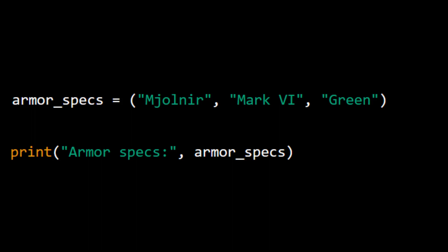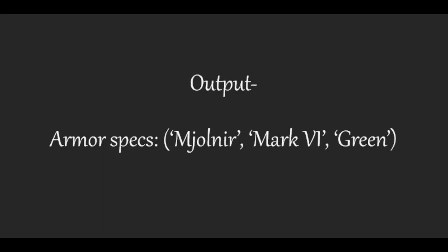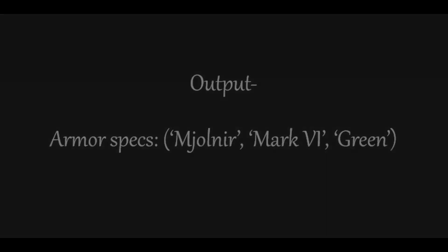Example: armor_specs = ("Mjolnir", "mark six", "green"). print("Armor specs", armor_specs).